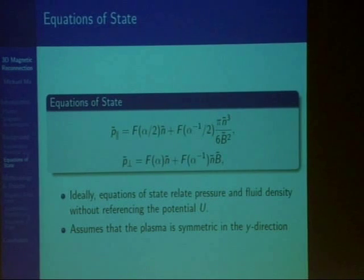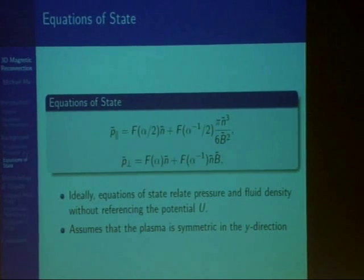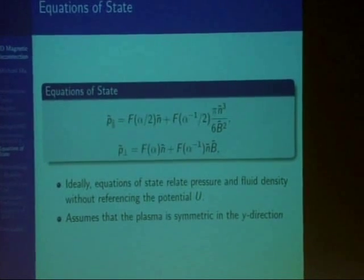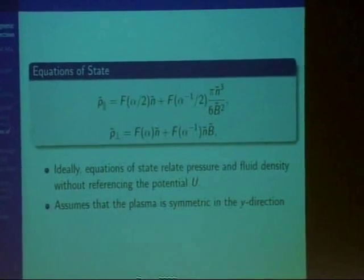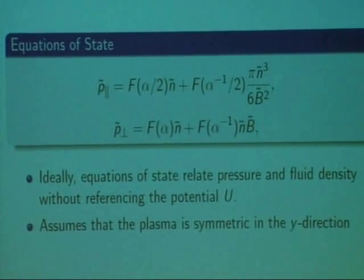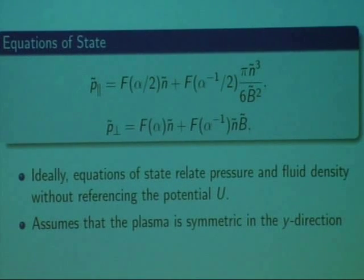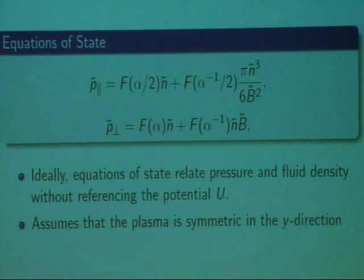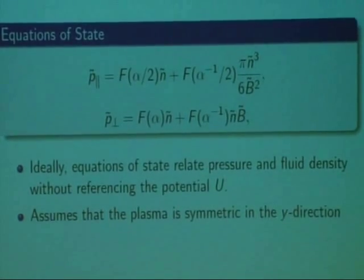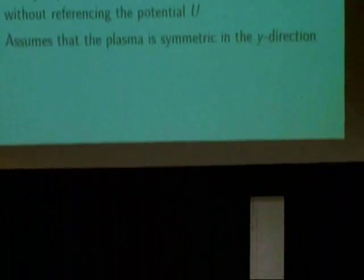The equations of state, which relate the components of pressure and the density without referencing the potential U, have also been created for two-dimensional plasmas. In these equations, f of x is basically a function which represents 1 over 1 plus x. These are the components of pressure and n is the density. What these equations assume is that the plasma is symmetric in the y direction. Unfortunately, in naturally occurring plasmas, this is simply not true.